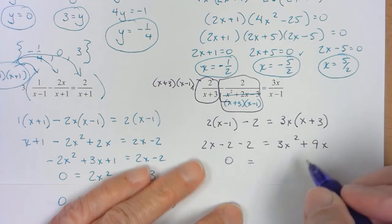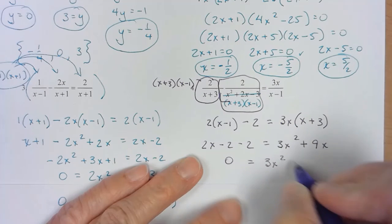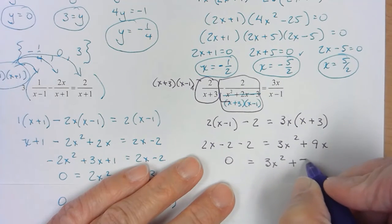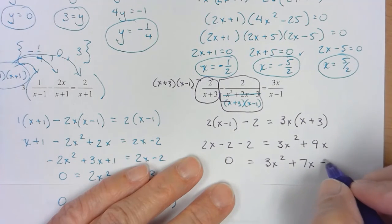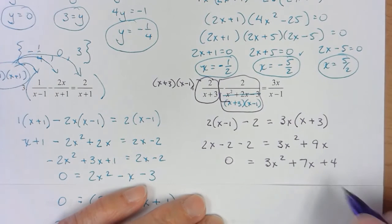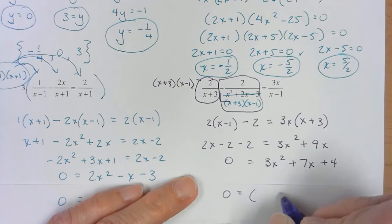So let me go ahead. I'm going to move this stuff to this side. So I've got 3x squared plus 7x. This would be a minus 4 here. But I've added to the other side. So I think that does factor. So you need to try and factor it. Pause me and factor that.